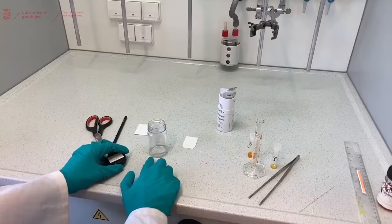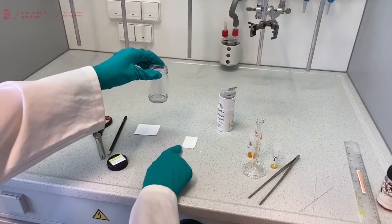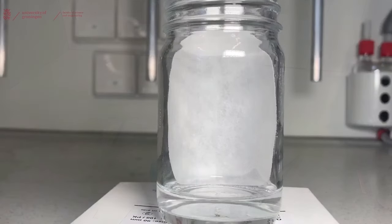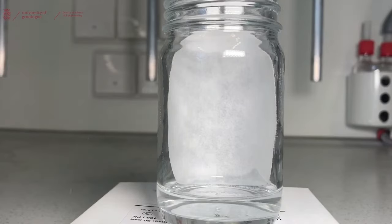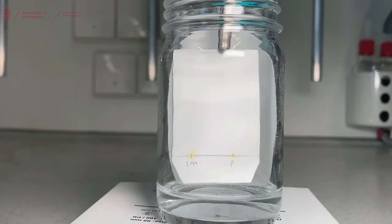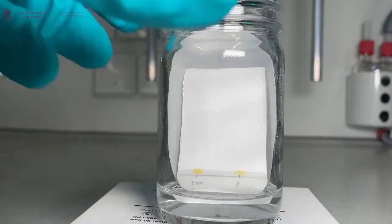Make sure that the liquid level of your TLC jar is lower than the baseline you draw on your TLC plate. Place the TLC inside of the jar. It's useful when you're doing this to use tweezers, because your fingers often don't fit into the jar. Carefully place it down leaning against the filter paper and close the jar.